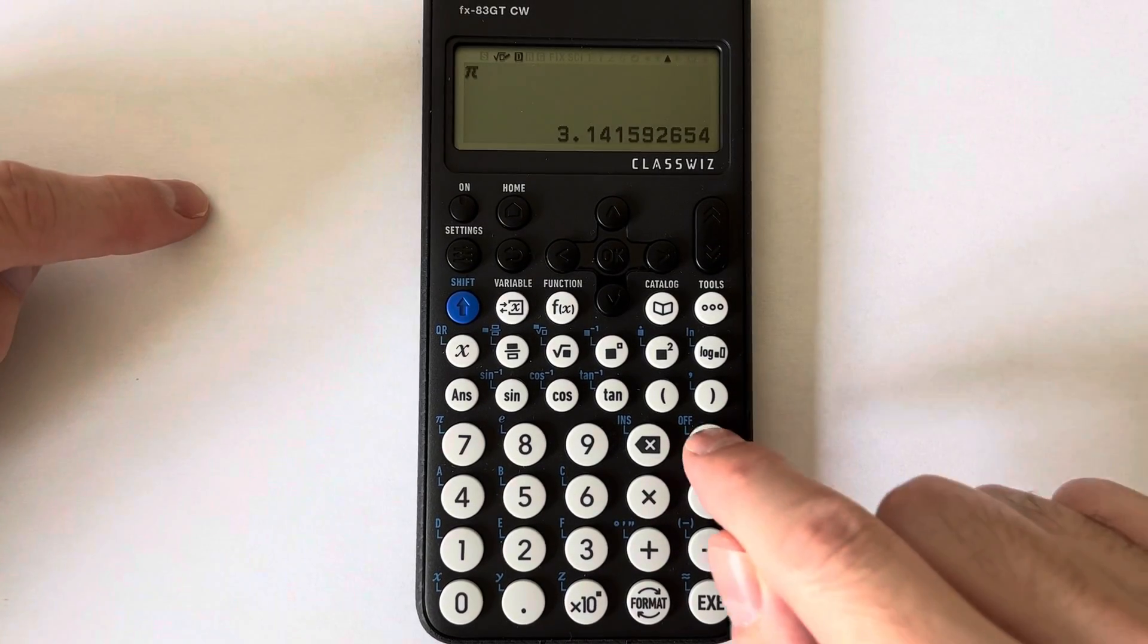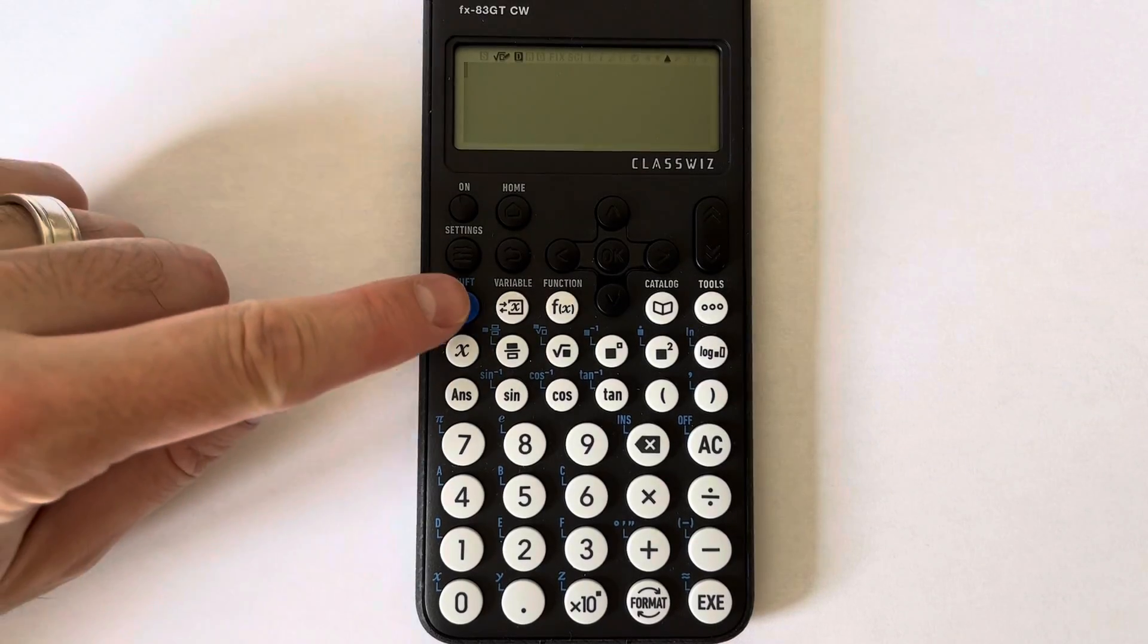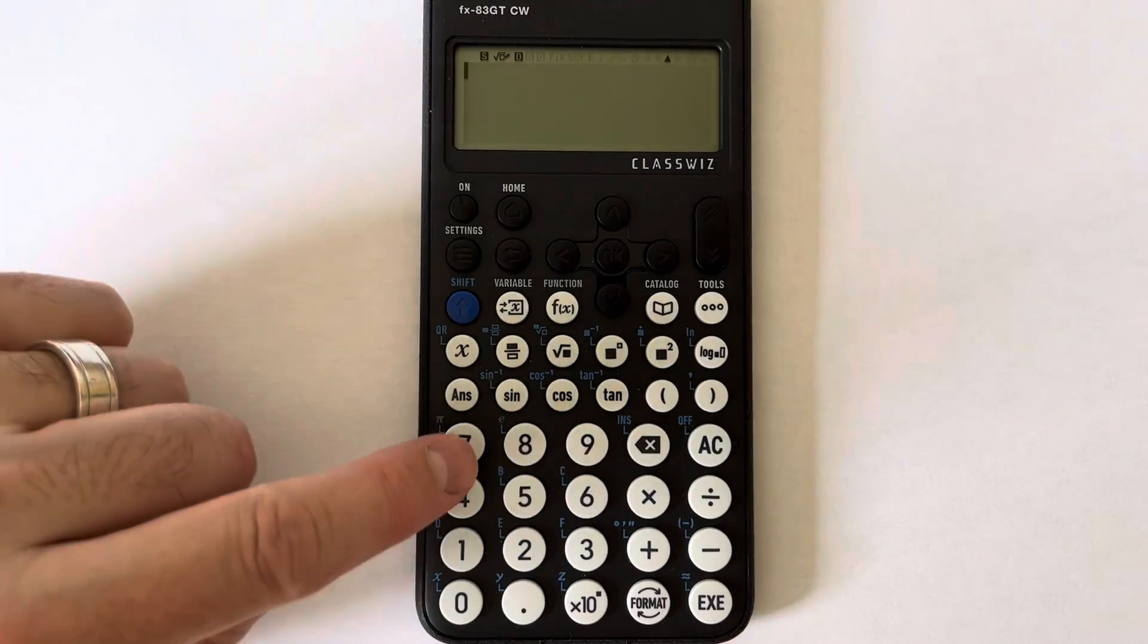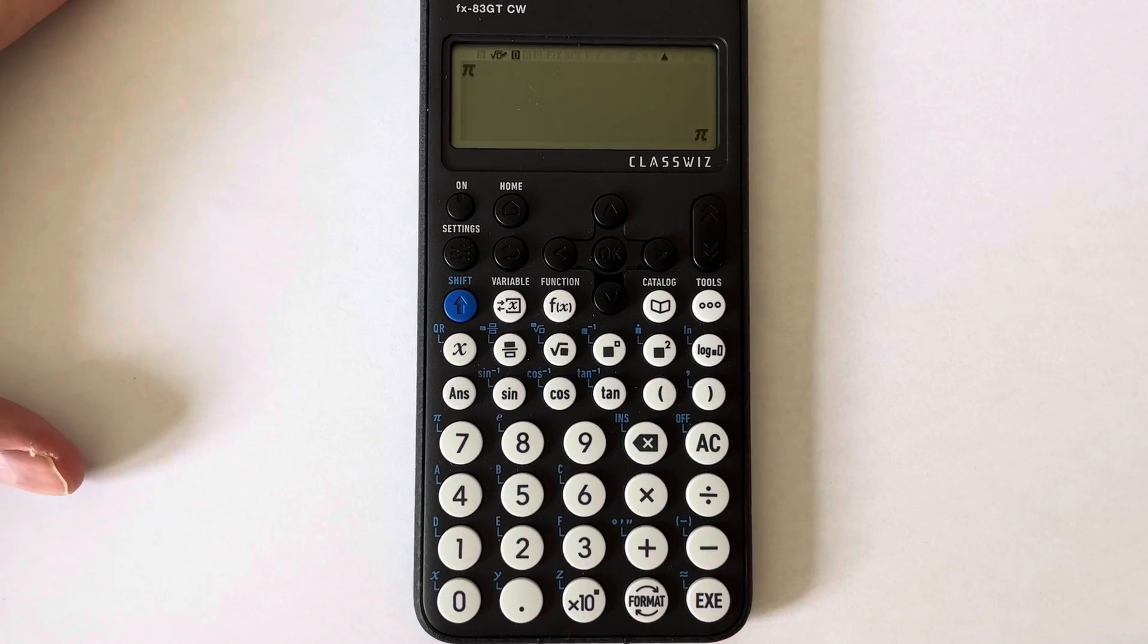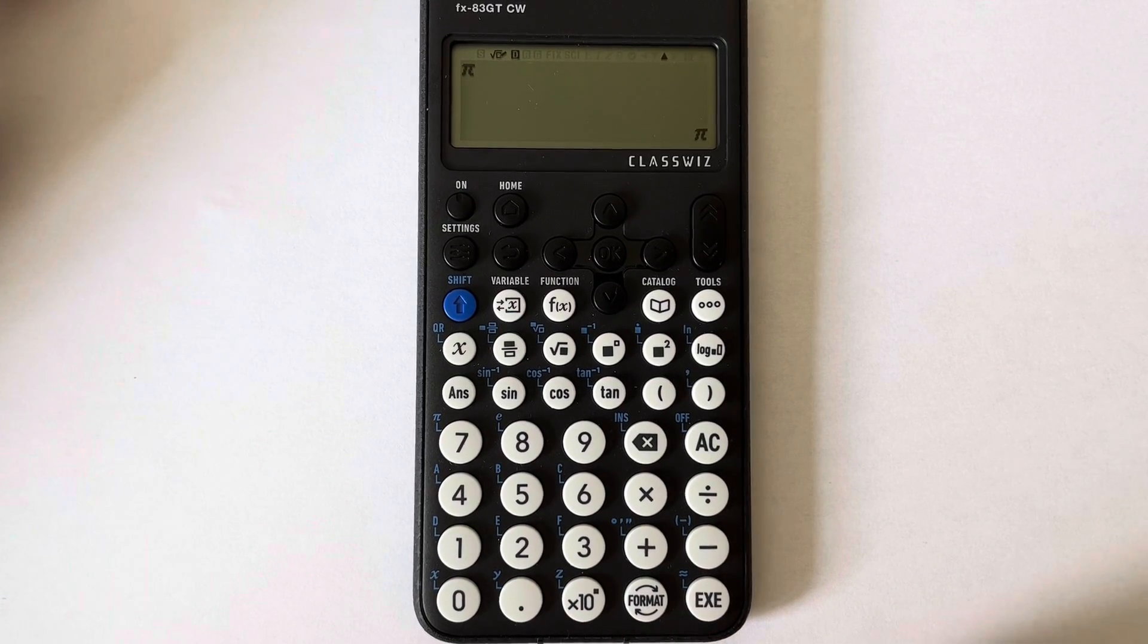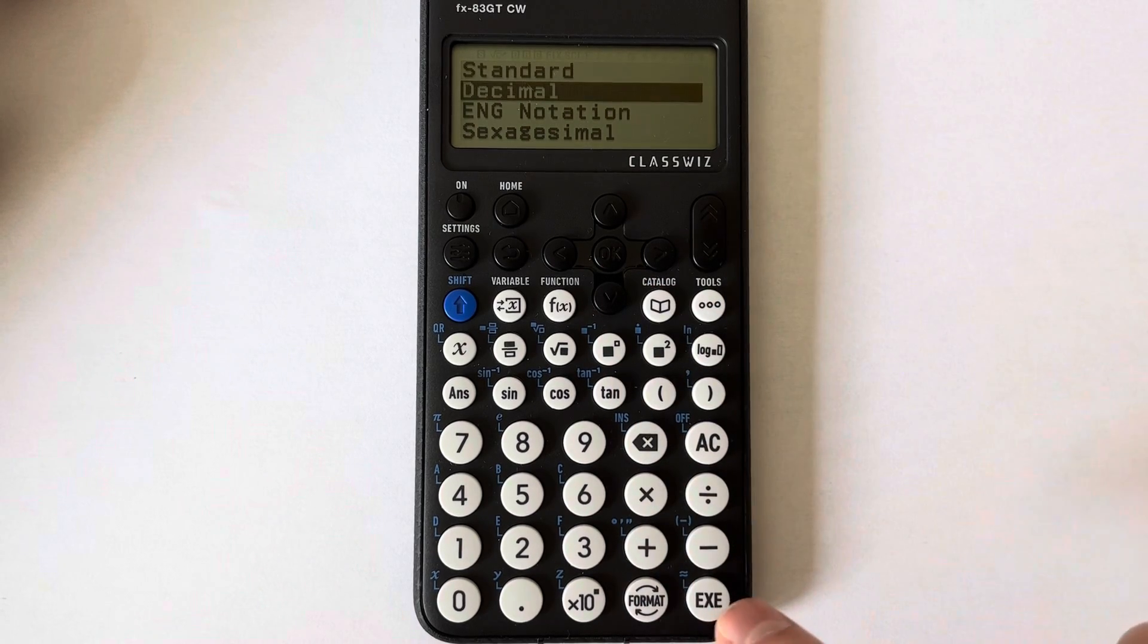So let's do that one more time. To get the pi key up, we press shift and then seven. Press the execute key and there's pi.